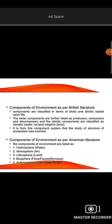It is called British classification and American classification. The components include the Hydrosphere - it is called a blanket. The Atmosphere is a component. The layers of the atmosphere are: Troposphere, Stratosphere, Mesosphere, Thermosphere, and Exosphere. The deep biosphere is also a component.